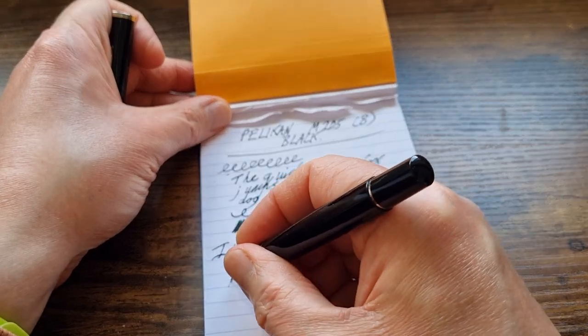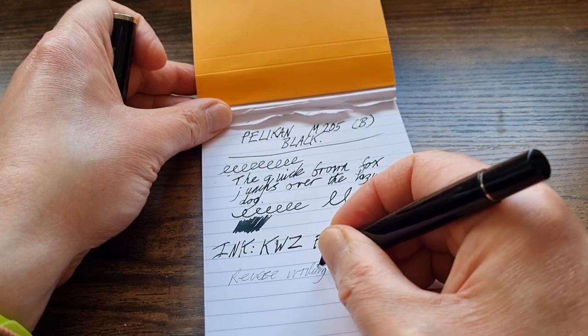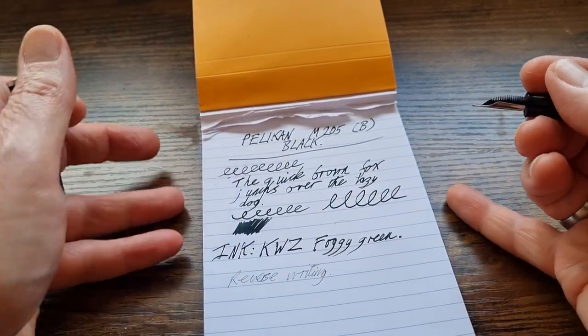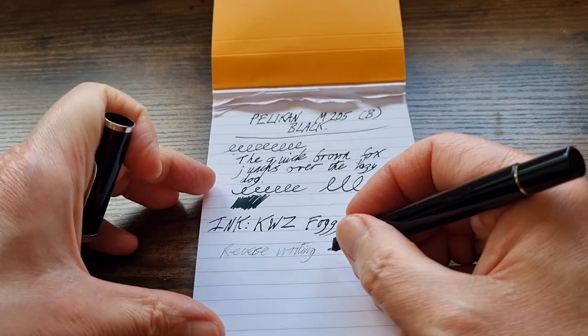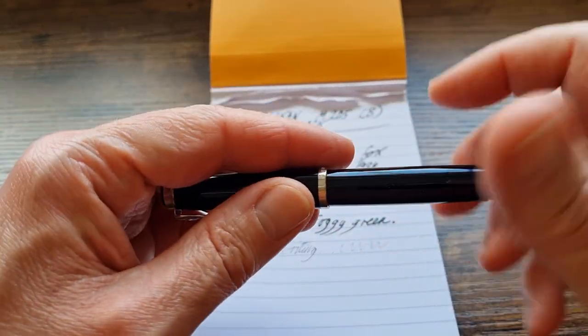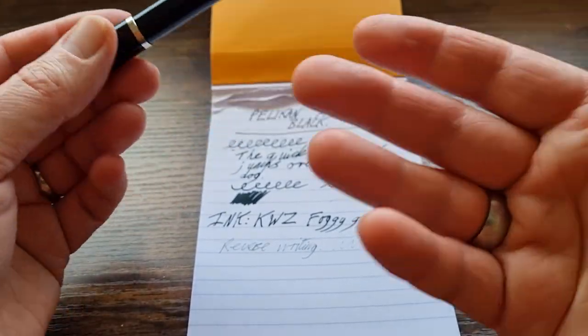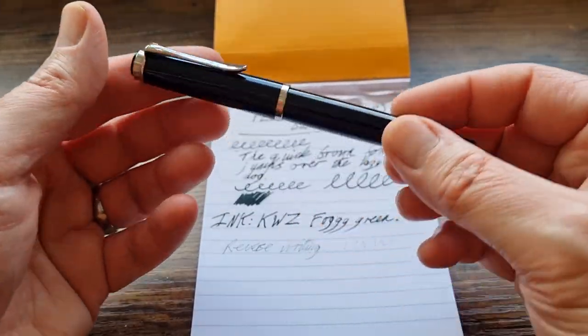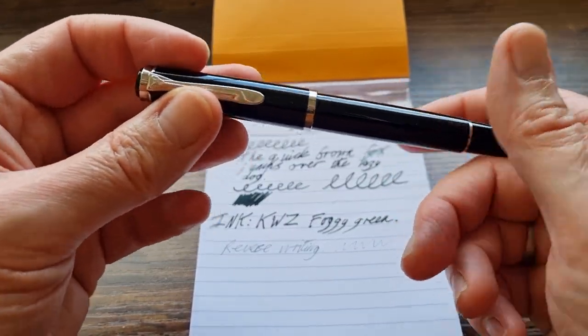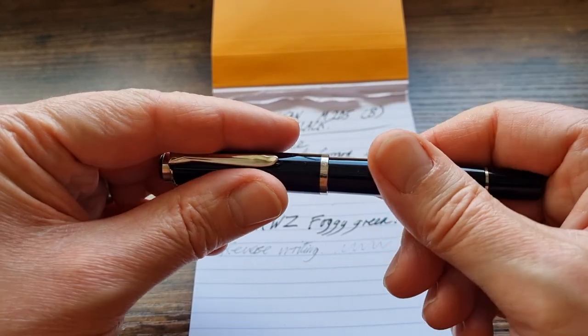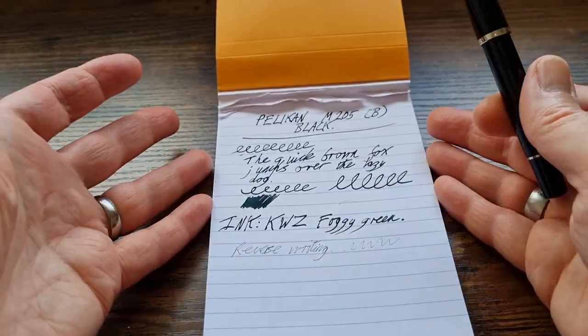Reverse writing is, no, not good. But, that is not how the nib is supposed to be written with. It's scratchy. You can almost feel the tines trying to part. It's not good. But, remember, reverse writing isn't something that you will find is consistent from nib to nib. Even nibs, you can have two Pelican M205 blacks fitted with broad nibs. And both of them may be slightly different when you're writing with them in the usual fashion. So when you start messing around and reverse writing, one might write better than the other one. So, I'm never going to hold that against a pen.